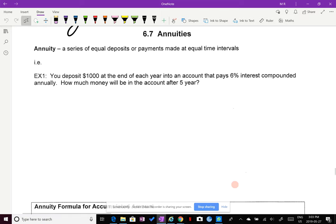Okay, 6.7 annuities. This lesson is on annuity. What is an annuity? It's a series of equal deposits or payments made at equal time intervals.